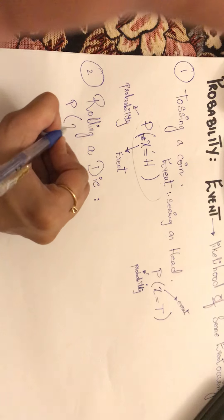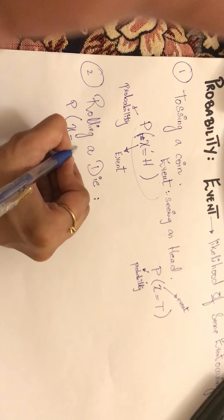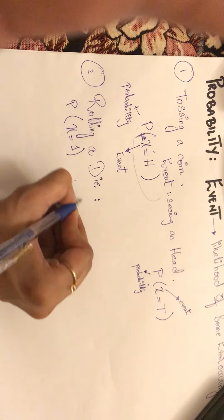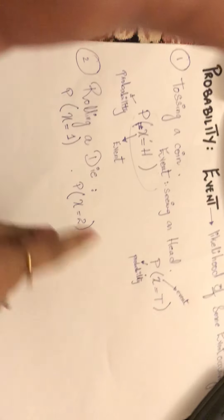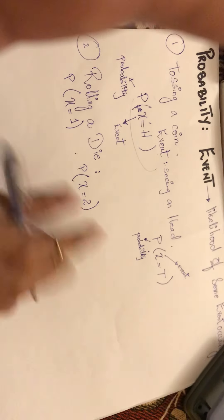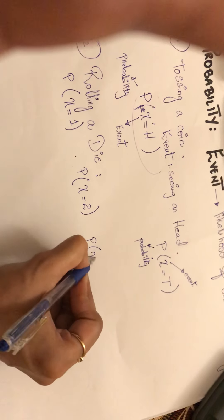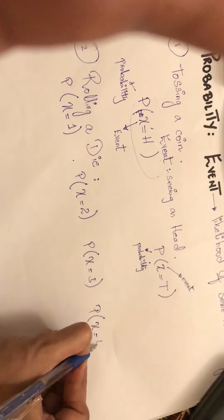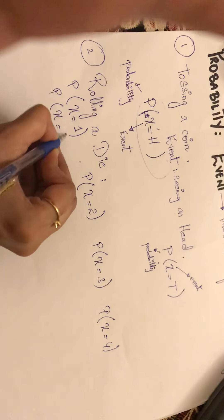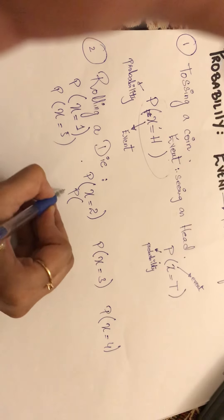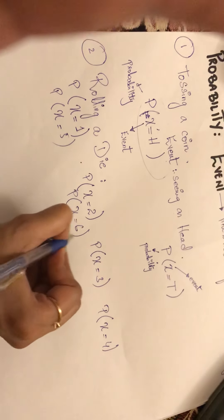Now these are the number of events that may occur. If I have achieved two, I will write like this. If I have achieved three, I will write like this. If I have achieved four, five, or six, I will write like this for each. But there are many different examples regarding it.